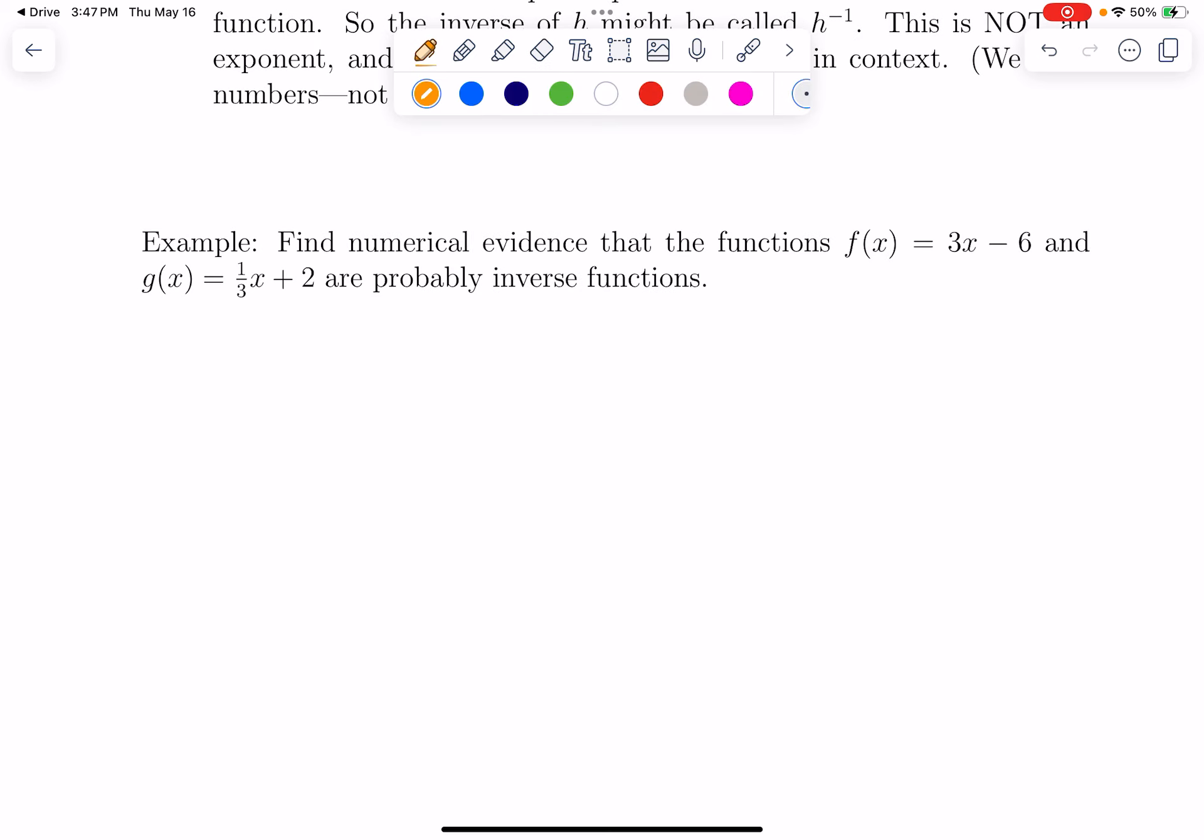So, if we have two functions and want to know if they are inverses, we can just kind of guess a number and see if there's numerical evidence. So, here I'm just throwing two functions at you. And can we find numerical evidence that we believe these are functions? So, what you can do is you can just pick a number somewhat randomly. Let's suppose I have 5. F of 5, according to this rule, would be 3 times 5 minus 6, which is 15 minus 6, which is 9.